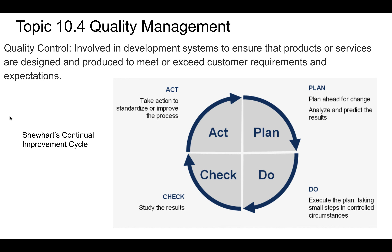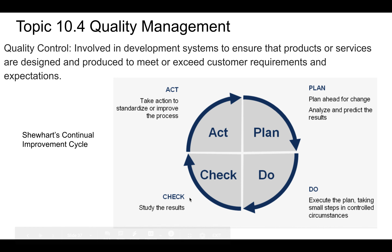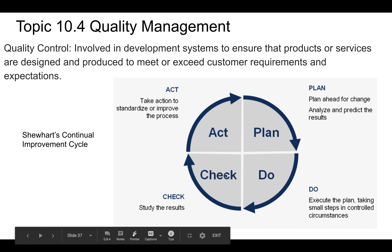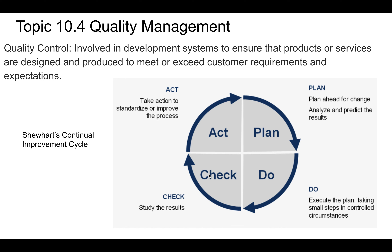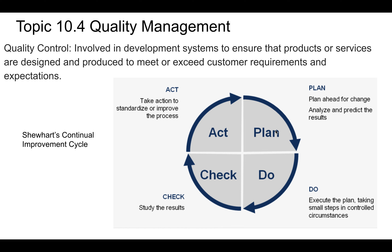One of the ways that we do this is something called Shewhart's Continual Improvement Cycle. It's basically not that different from many other cycles we look at. You can start anywhere in the cycle — you're studying results, you take action to standardize or improve a process, you plan how you're going to do that, you execute the plan, and you check. It's essentially like a plan-do-review, and you're trying to work that into the entire process.